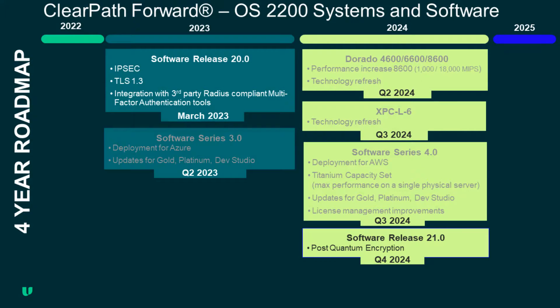Here is a view of the latest overall ClearPath Forward four-year roadmap for both OS 2200 systems and software. There is more to come in 2023, and a busy 2024 is planned to deliver barrier-breaking solutions to advance your business and discover new possibilities.